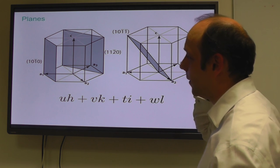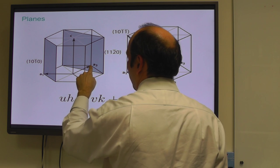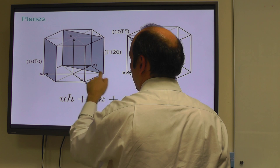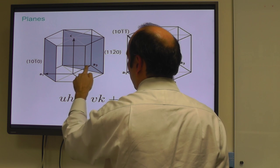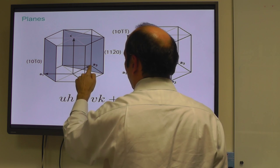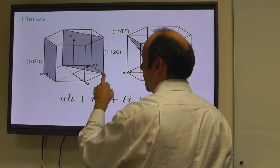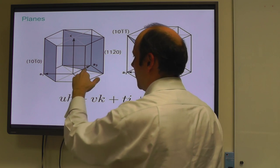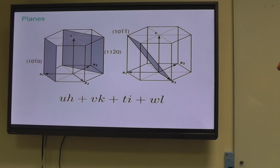If we take this third one, 10-1-1, starting from there, we've got bar 1 in C, we've got 1 in A1, 0 in A2, and bar 1 in A3. So it's 1 A1, no A2s, bar 1 A3, and bar 1 C. That's a 10-11 plane. The nice thing about this four-axis notation is that the Weiss zone law works: U H plus V K plus T I plus W L sums to zero, then the vectors are in the plane.